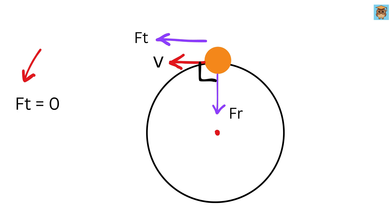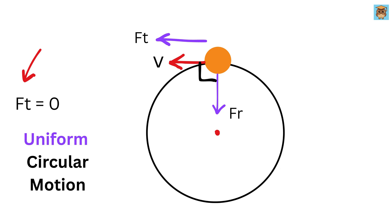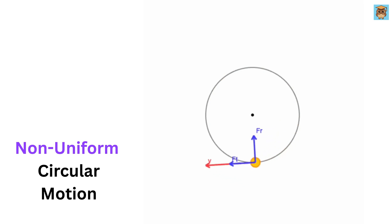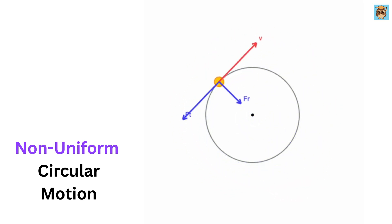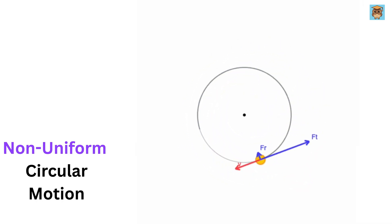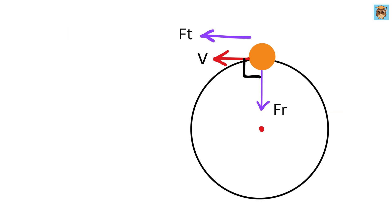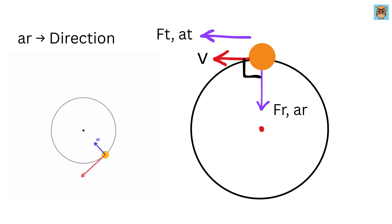A key point: the tangential component of force is zero only in uniform circular motion, where speed remains constant. In non-uniform circular motion, the speed changes, meaning there is a non-zero tangential component of force. If this tangential force is in the direction of velocity it increases speed; if opposite, it decreases speed. But no matter whether the circular motion is uniform or non-uniform, the radial force is always present. Thus we can have both radial centripetal acceleration and tangential acceleration.